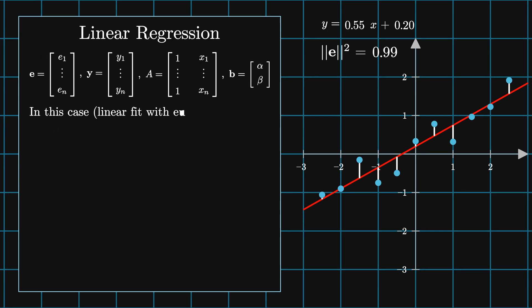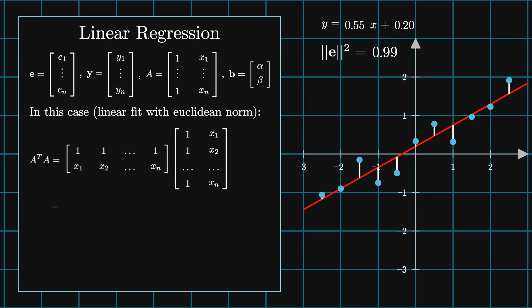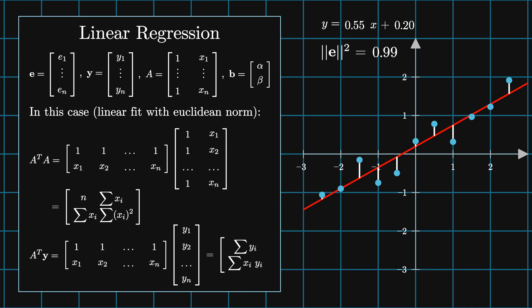In our 2D example, we can multiply out A^T A, which gives the symmetric 2x2 matrix with entries n, the sum of x_i, the sum of x_i, and the sum of x_i squared. Dividing out by n, the off-diagonal terms are the average of the x positions and the diagonals are 1 and the average of the x squareds. Likewise, A^T y gives a vector of n times the average of the y positions and n times the average of the product x_i y_i. This gives a geometric interpretation of the process.